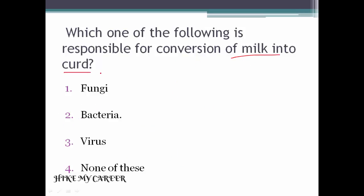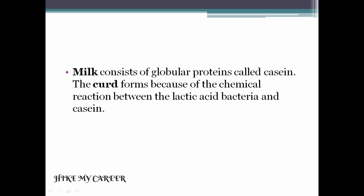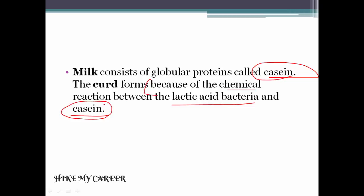Next question: Which one of the following is responsible for conversion of milk into curd? Answer is bacteria. Bacteria is responsible for the conversion of milk into curd. Milk consists of globular proteins called casein. Curd forms because of the chemical reaction between the lactic acid bacteria and the casein. This is a very important point, please note it.